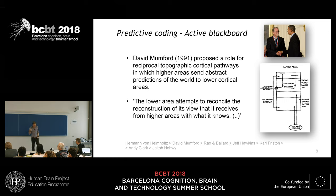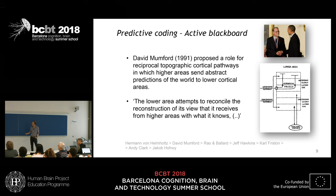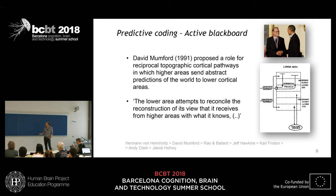David Mumford not only proposed this concept of an active blackboard but also an architecture of how that is possible in the six-layered cortex — which layers receive the feedback. These are the top layers and the bottom deepest layers, whereas the feedforward input comes into the mid layers. We will use ultra-high resolution fMRI to investigate the kind of information that is passed in these different layers of cortex.